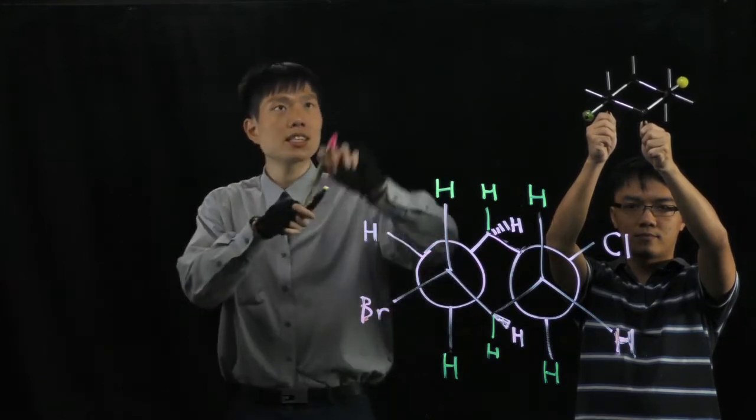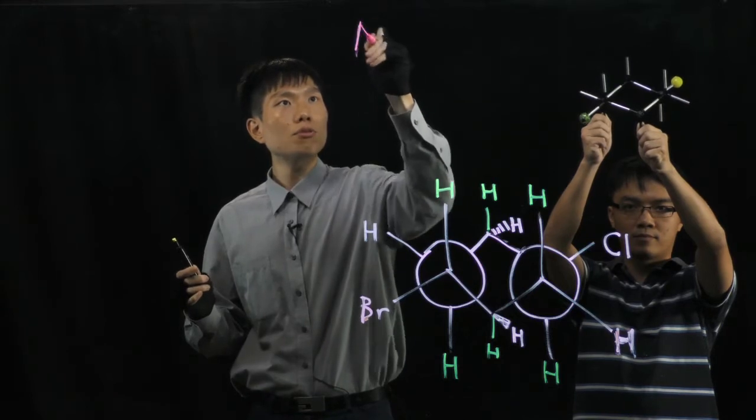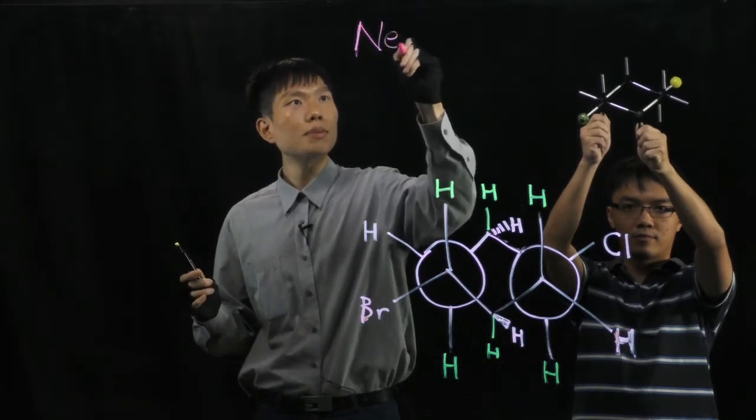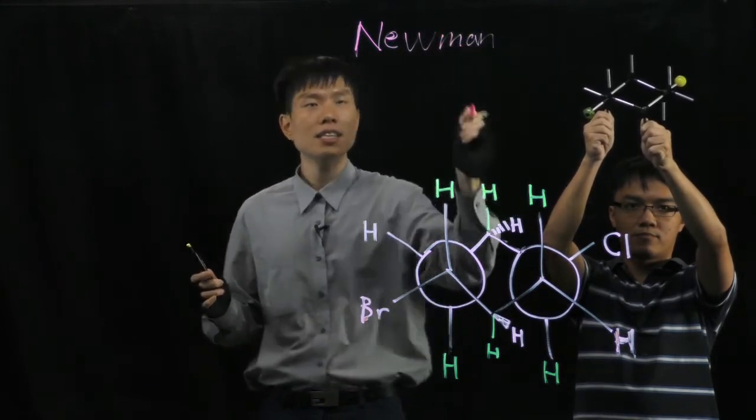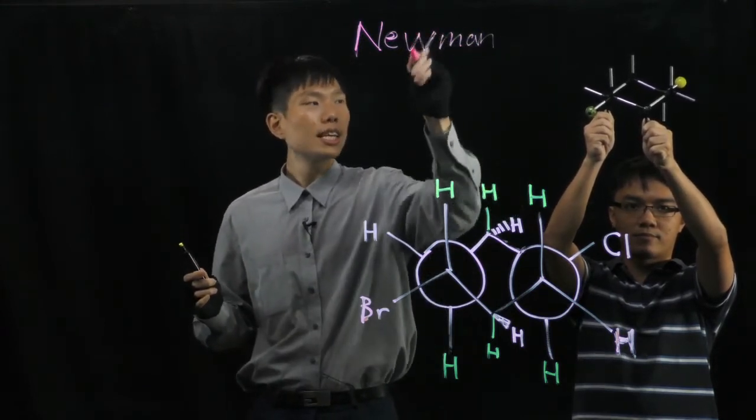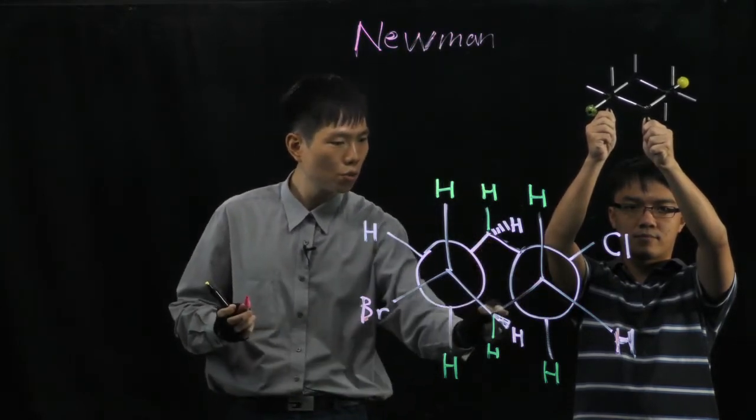Because we are looking at a Newman projection, we know that we have to look through the carbon bond. So in this diagram you see only 4 carbons: 1, 2, 3, 4.